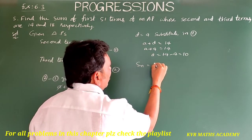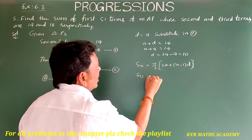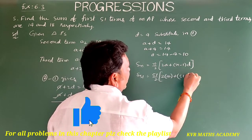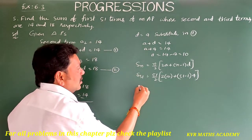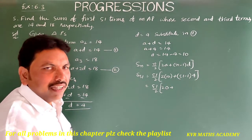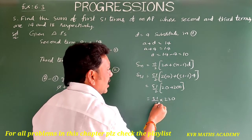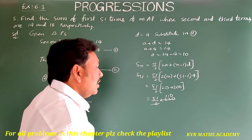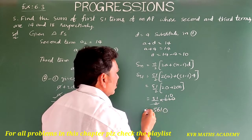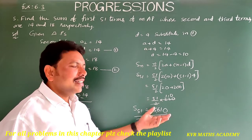We need to find S51. The formula is Sn = n/2 · (2a + (n−1)·d). So S51 = 51/2 · (2·10 + 50·4) = 51/2 · (20 + 200) = 51/2 · 220 = 51 × 110 = 5610. The sum of the first 51 terms is 5610.